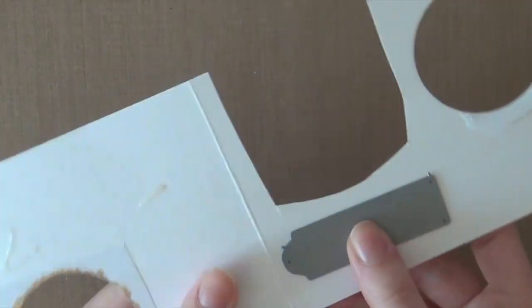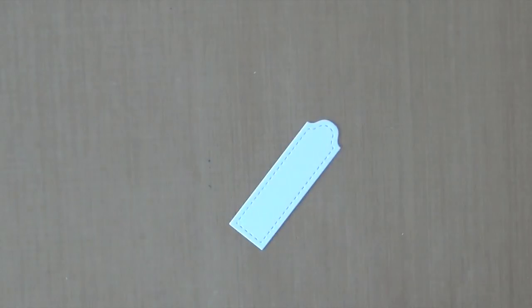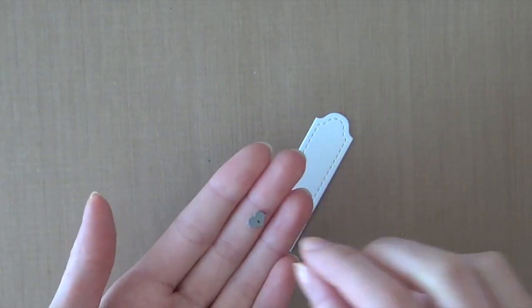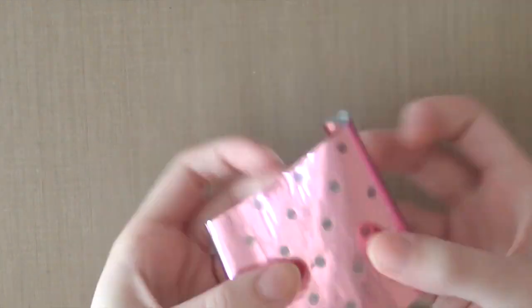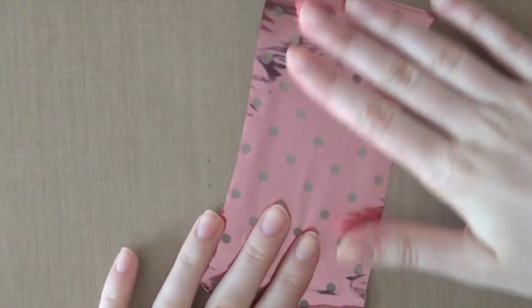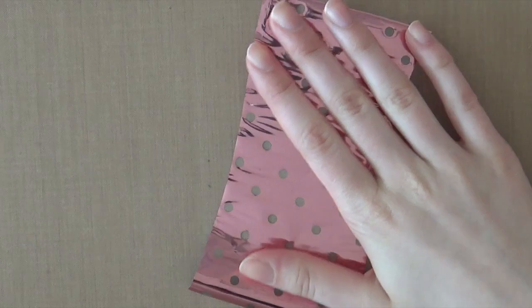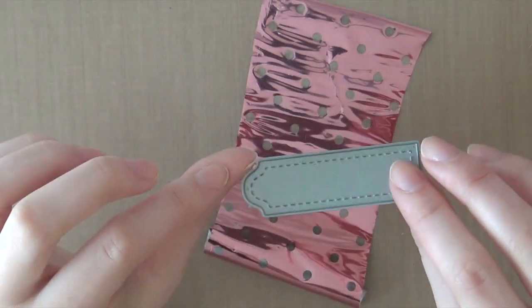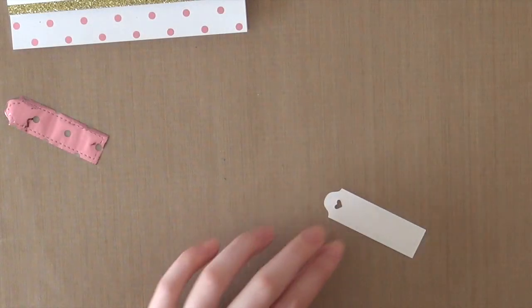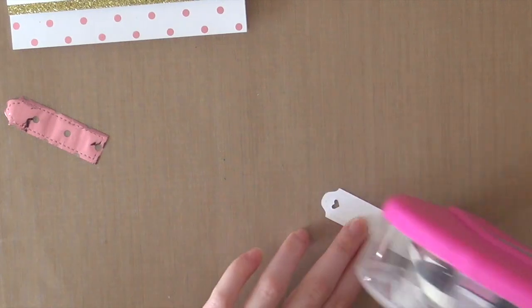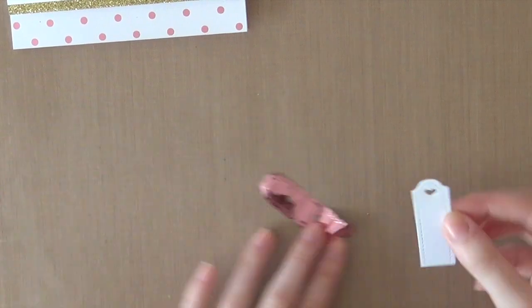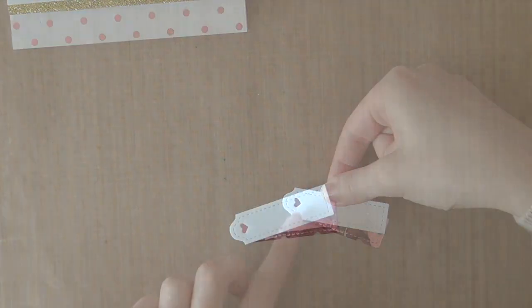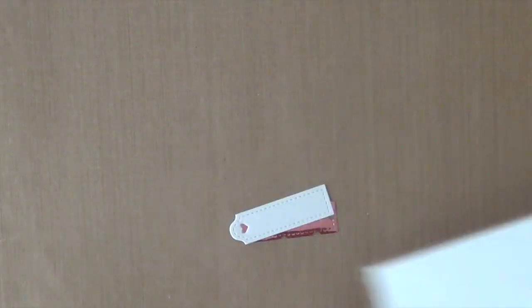I'm going to use the Pretty Pink Posh Stitched Labels die cut set. I'm going to die cut one of those labels out of some white cardstock. And then I'm going to die cut that little heart from the same die cut set out of the tag. I'm going to use the negative piece of that foil that we used earlier and use it to die cut that tag once again. I'm going to adhere it behind the white label.